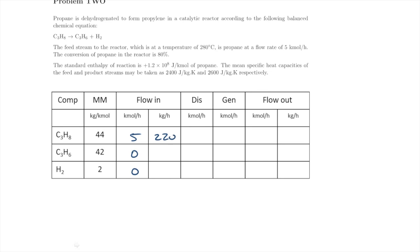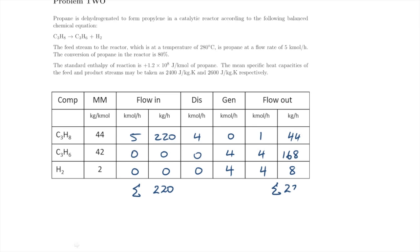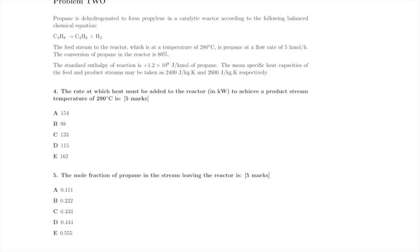We plug those numbers into our mass balance table and multiply molar mass by molar flow rate to get mass flow rate. The sum of mass flows in and the sum of mass flows out are both 220 kg per hour, which confirms total mass is conserved.